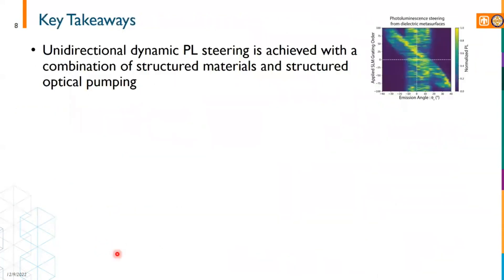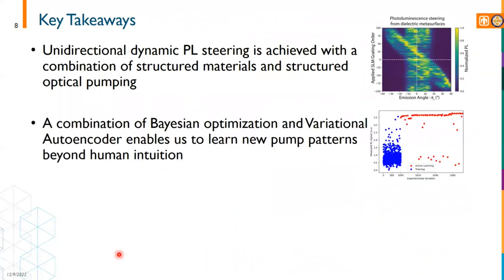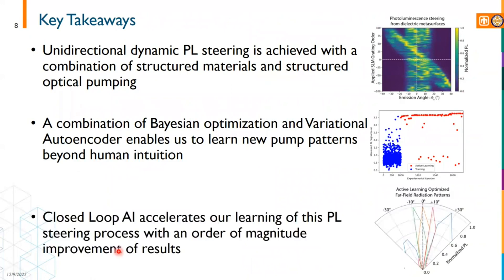In conclusion, we've shown that uni-directional photoluminescent steering is achieved with a combination of structured materials and structured optical pumping. A combination of Bayesian optimization and variational autoencoder enables us to learn new pump patterns beyond human intuition. In the closed loop, AI accelerates our learning of this PL steering process with an order of magnitude improvement of results.